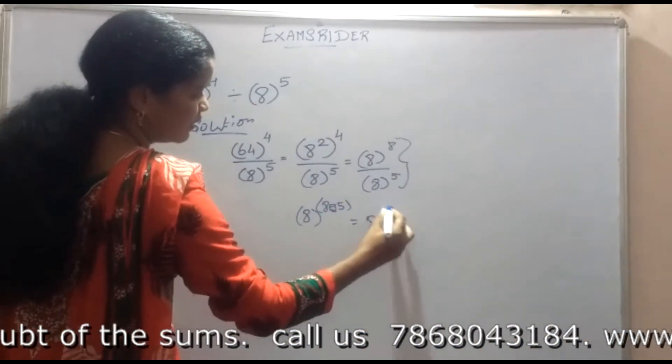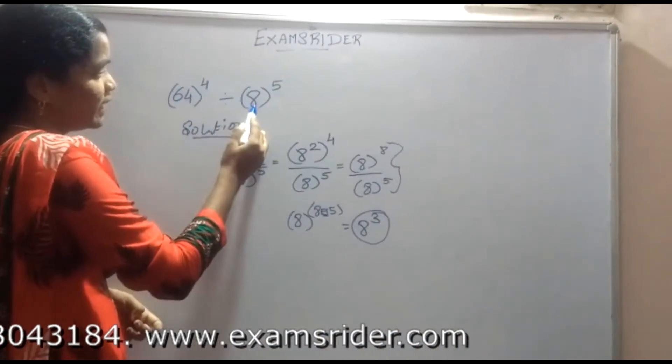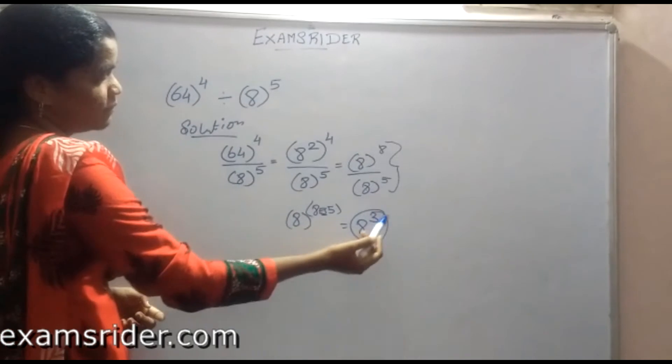That is 8 power 3. So 64 power 4 divided by 8 power 5, the answer is 8 power 3.